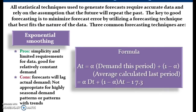Exponential smoothing is one of the most commonly used techniques because of its simplicity and its limited requirements for data. It needs three types of data: an average of previous demand, the most recent demand, and a smoothing constant between 0 and 1. Using a higher constant assumes that the most recent demand is a better predictor of future demand.